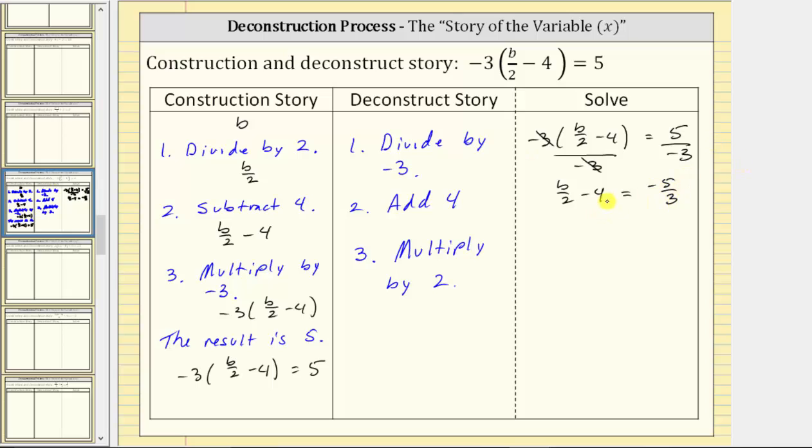The second step to solve for B is add four to both sides. On the left, minus four plus four simplifies to zero. We have B divided by two equals. Let's find this sum down here. We have negative five-thirds plus four or plus four over one. The least common denominator is three. We multiply four over one by three over three. This gives us negative five-thirds plus twelve-thirds, which equals seven-thirds. So the right side of the equation is now equal to seven-thirds.